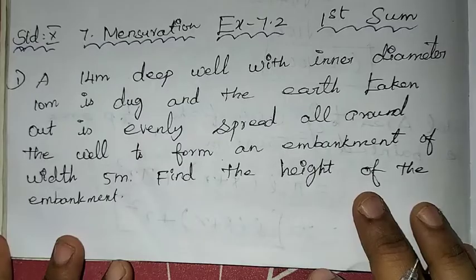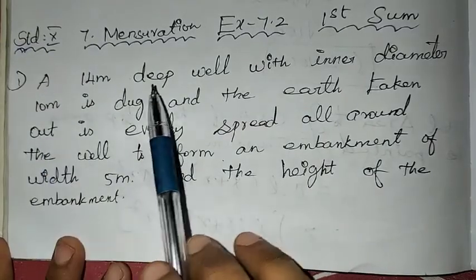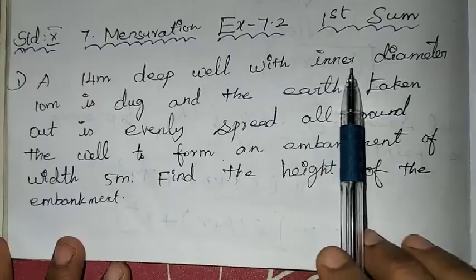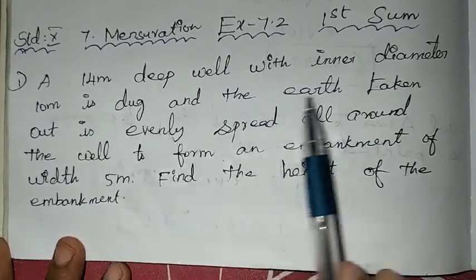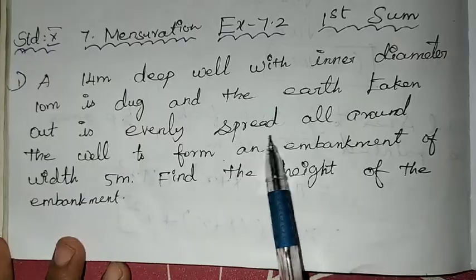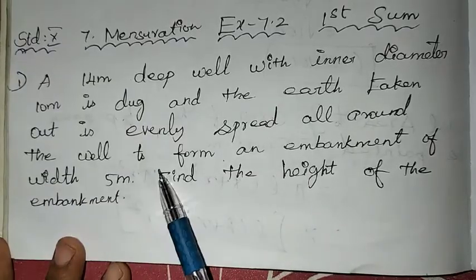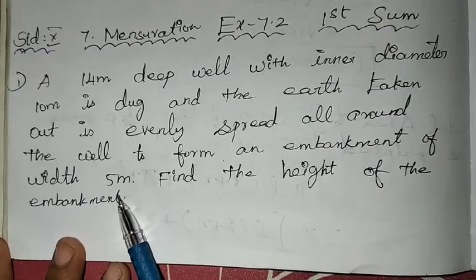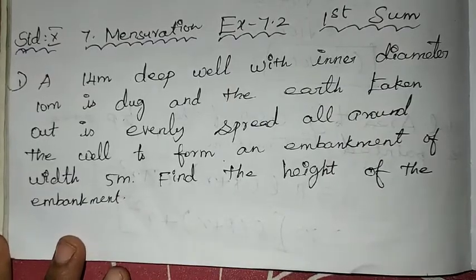Let's look at the first sum. In the problem: a 14 meter deep well with inner diameter 10 meters is dug, and the earth taken out is evenly spread all around the well to form an embankment of width 5 meters. Find the height of the embankment.